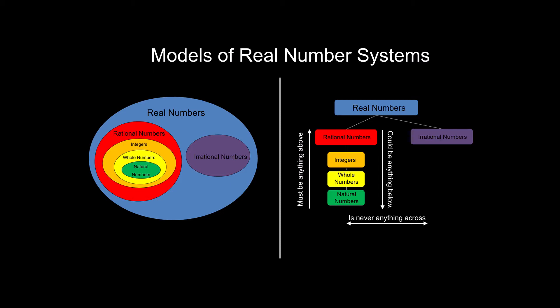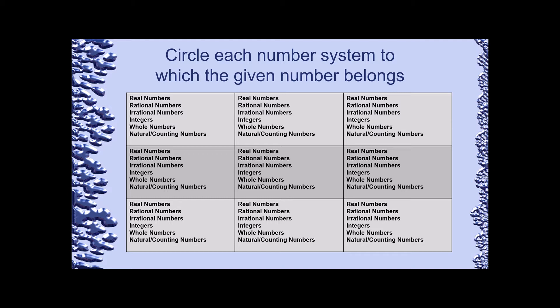If that was too quick a run-through, you might want to go back and look at that previous video. I'd suggest you pause the video and try classifying negative 15. Negative 15 is real because it can be found on a number line. It can be written as a fraction, which means it cannot be irrational. It is an integer because it does not have a fractional or decimal part, but whole numbers are 0, 1, 2, 3, and so on — there are no negative signs with whole numbers. As soon as I know it's not whole, I know it cannot be a natural counting number either. Integer is the best name because it's the most specific name that can apply.